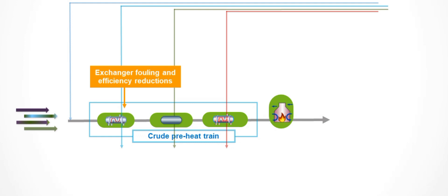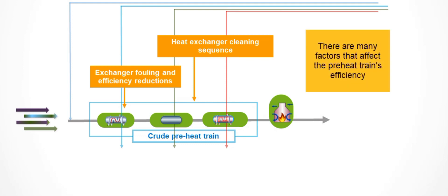The optimal heat exchanger cleaning sequence is not easy to identify. The exchanger with the most pressure drop or the most fouling is not always the exchanger with the highest impact on preheat efficiency. Consideration for the time until the next turnaround, flow rates, and fouling rates makes optimization an exercise that requires sophisticated modeling solutions such as Aspen HYSYS and Aspen Exchanger Design and Rating.